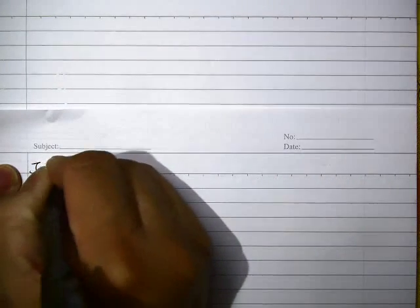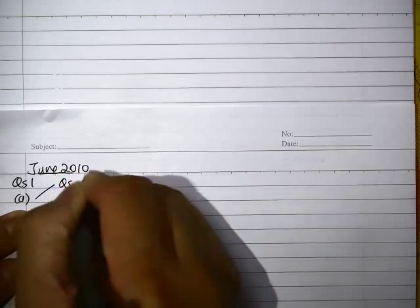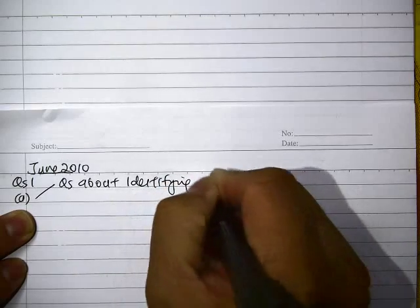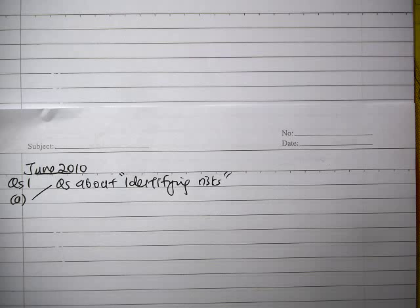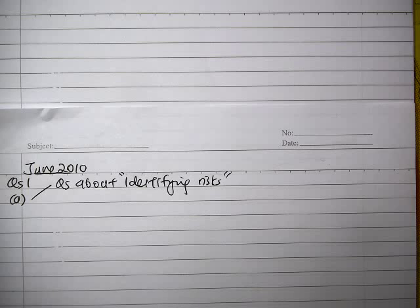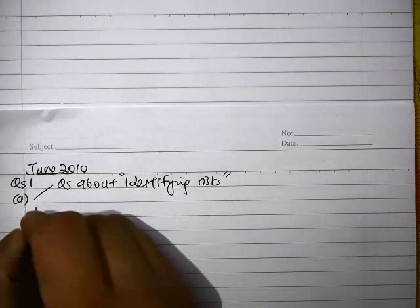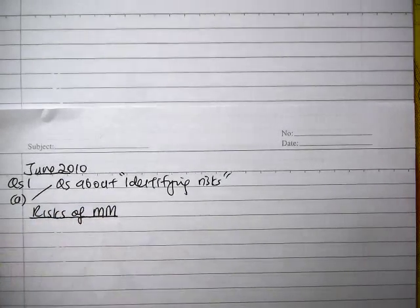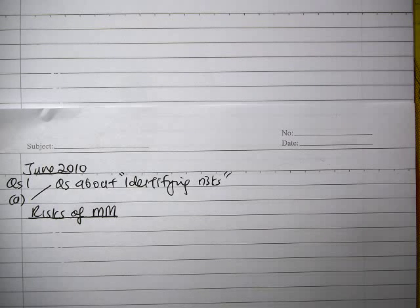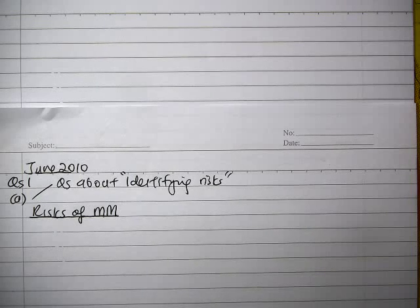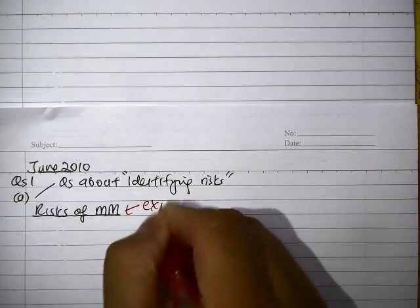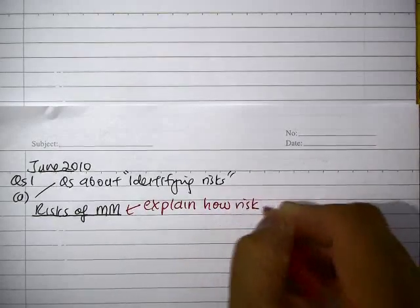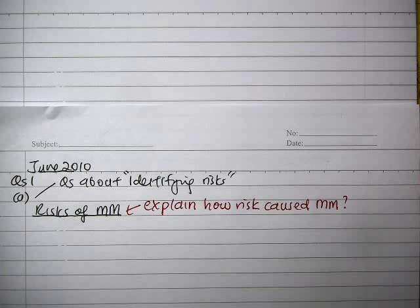Now let's work through part A. This is a very popular requirement in the exam — identifying risk. You must understand which part of the risk you'd like to relate them under. We will relate risk under risk of misstatement. When you identify the risk, you must also explain how the risk causes the misstatement. Ideally the answer should be presented in a table with a risk column and an explanation column.